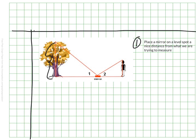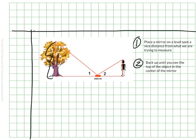To do this, we would first place a mirror on a spot, like a nice level spot, a pretty good distance from what we are trying to measure. From there, you would then step back, walk backwards, until you see the top of the object, in this case the tree, in the center of the mirror.